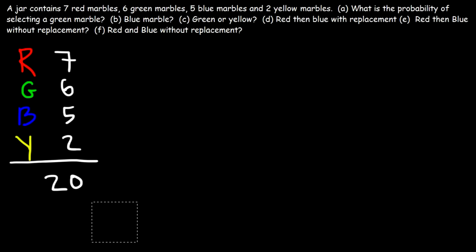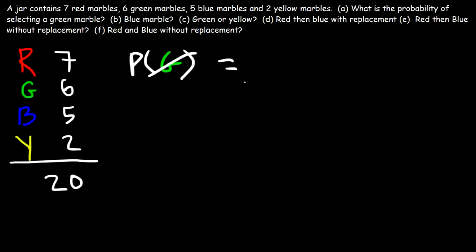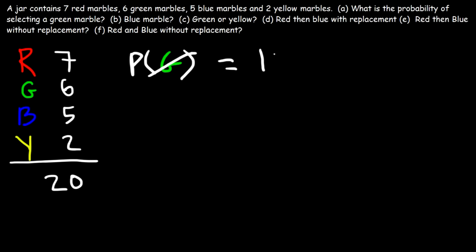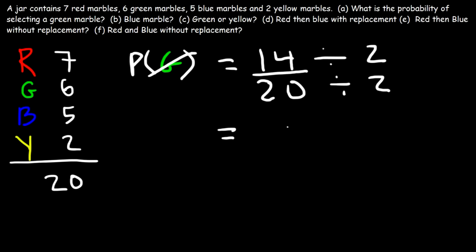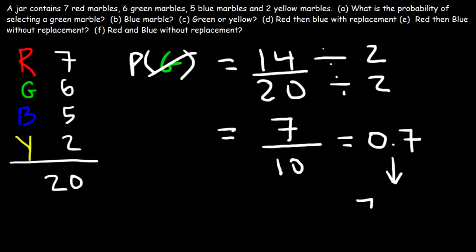Now let's talk about another way in which we can calculate the probability of not selecting a green marble. The other technique involves finding how many marbles are not green. So we have 7, 5, and 2. That's 7 plus 5 is 12, 12 plus 2 is 14. So there are 14 marbles that are not green, 14 out of a total of 20. Let's reduce this fraction by dividing both numbers by 2. 14 divided by 2 is 7, 20 divided by 2 is 10. So we get 7 out of 10, which is 0.7. And 0.7 multiplied by 100 gives you 70%. So there's a 70% chance of not selecting a green marble.